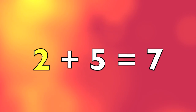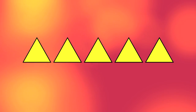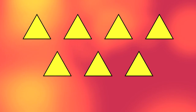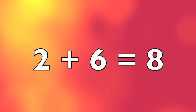2 plus 5 equals 7. 2 triangles plus 5 triangles equals 7 triangles.